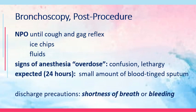After bronchoscopy, keep the patient on NPO until the cough and gag reflexes return, then give ice chips and fluids. Monitor older adults for confusion and lethargy, which may indicate anesthesia overdose. Expect small amounts of blood-tinged sputum within the first 24 hours. On discharge, educate the patient to return immediately if there is sudden onset of shortness of breathing or bleeding.